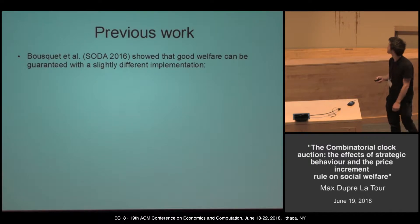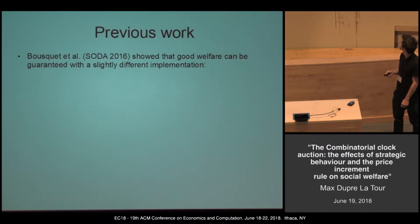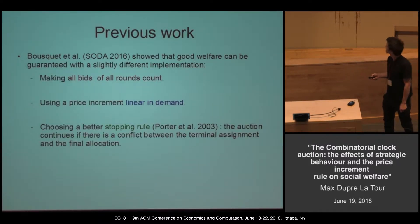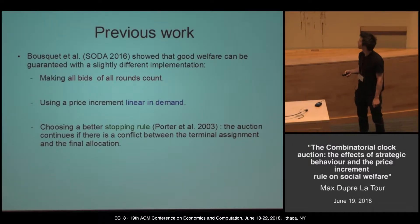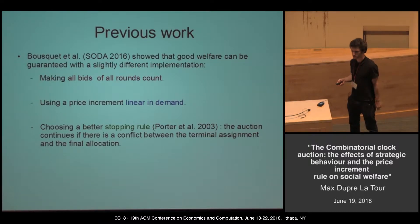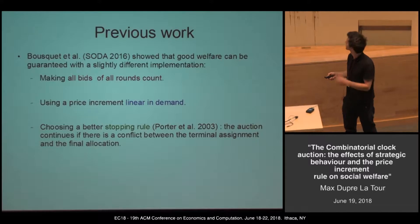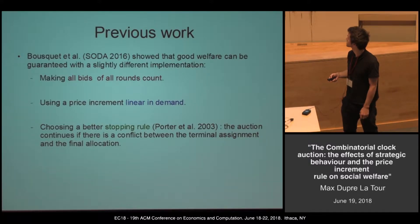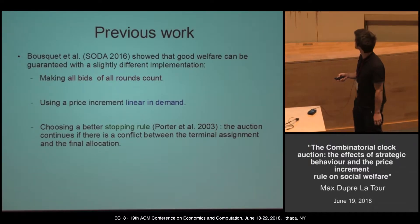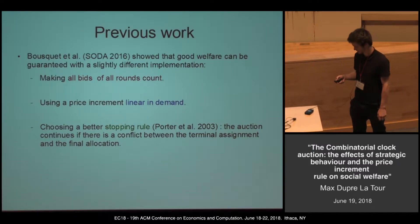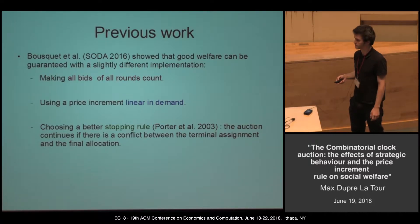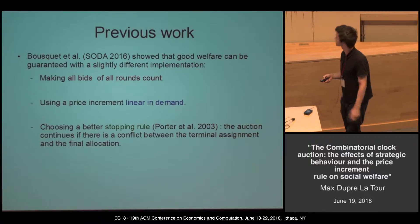There is previous work in the SODA paper of 2016 by Busquets et al. that showed three conditions were necessary to have good welfare with the CCA. First, we need to use all the bids made during the auction, not only the final bids — you take all bids from all rounds and compute the revenue-maximizing allocation. The second condition is that you must use a price increment that is linear in demand. The third condition, already in the Porter et al. paper of 2003, deals with the stopping rule: you may want to continue the auction if there is a conflict between the final allocation and the terminal assignments.